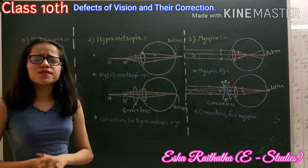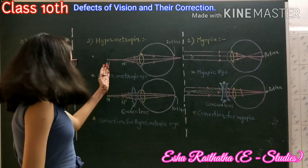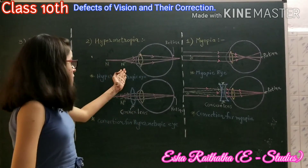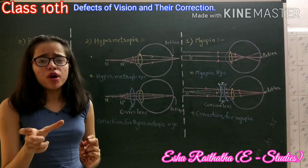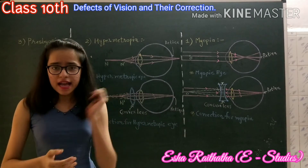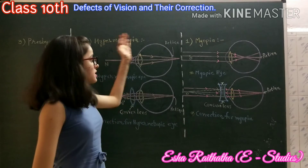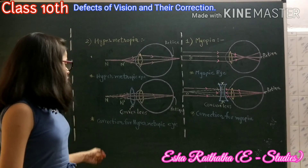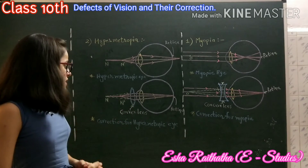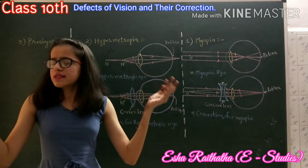Second, hypermetropia, also known as farsightedness. A person suffering from it can see distant objects clearly but cannot see nearby objects clearly. The near point for the person is farther away than the normal near point. As a result, the image of a near object forms behind the retina. To correct this, we use a convex lens of appropriate power, so that the image is formed on the retina and the defect is corrected.